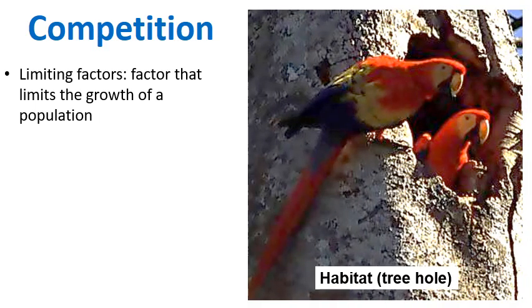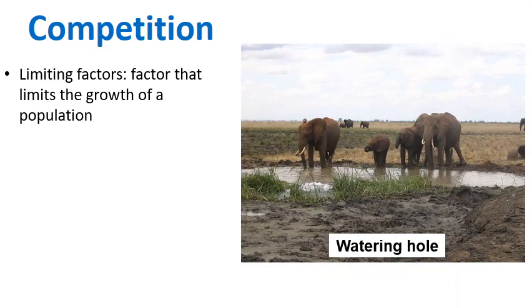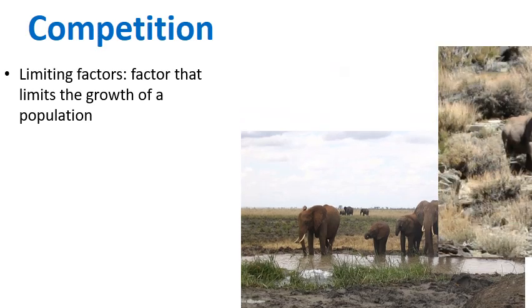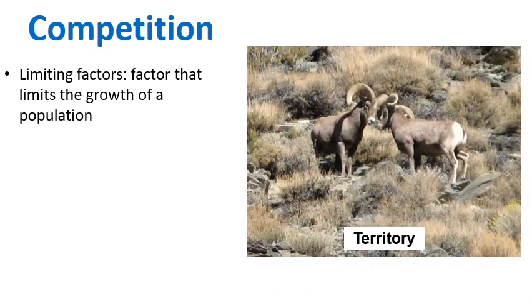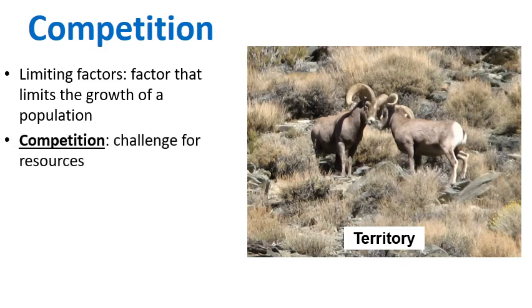In a community there are factors that limit the size of a population — we call these limiting factors. Examples would be habitats; there are only so many places to live in a community. Another example is water; there are only so many elephants that can survive off the water in Africa. Territory is another great example. Competition occurs whenever there is a challenge for these limited resources.